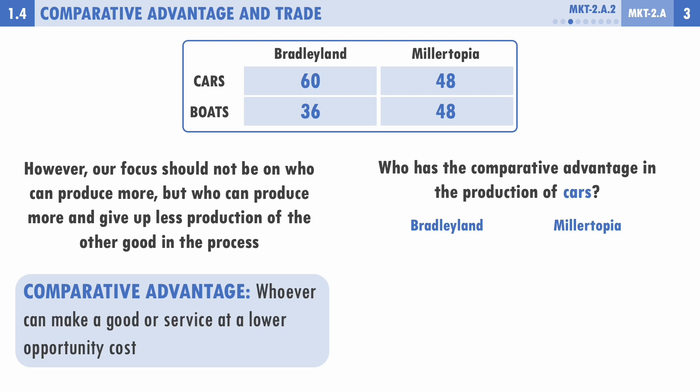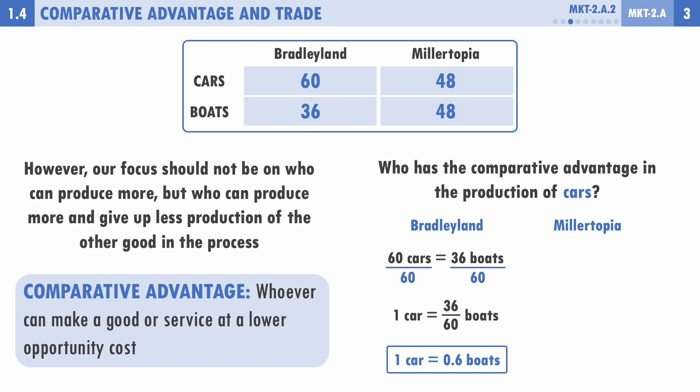To find the comparative advantage in cars, we do a little math. For Bradley Land, 60 cars is equivalent to 36 boats using the same resources. To get the opportunity cost of one car, divide both sides by 60: one car equals 36/60 boats, which simplifies to 0.6 boats. So every time Bradley Land wants to produce one more car, their opportunity cost is 0.6 boats — they must stop producing 0.6 boats.